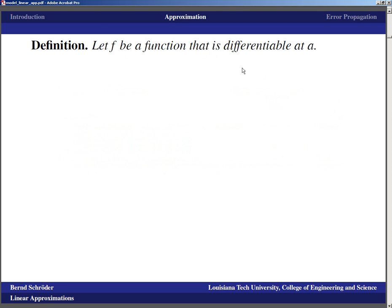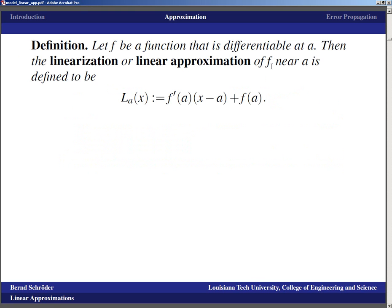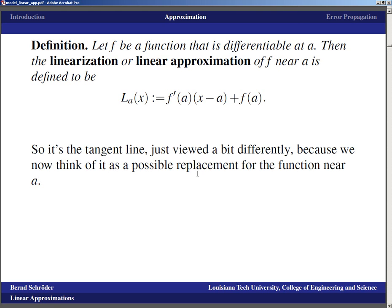What's the definition? If you've got a function that is differential at A, then the linearization or the linear approximation of the function F near A is defined to be L_A(x) = F'(A) times (x - A) plus F(A). At A, this function has a value F(A), it is a straight line, and its slope is F'(A), which means it is the tangent line. The idea behind the approximation however now is that we want to use this tangent line as a replacement for the function.